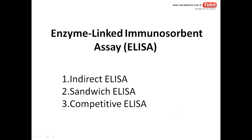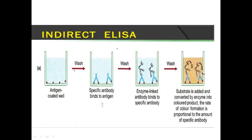There are three types of ELISA: the indirect ELISA, the sandwich ELISA, and the competitive ELISA. In the indirect ELISA, antigens are first added to the microtiter plate.